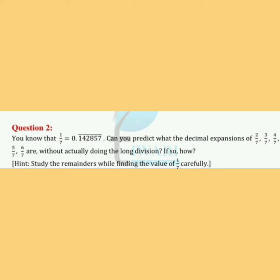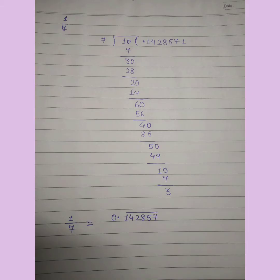सबसे पहले आपको पता होना चाहिए कि 1/7 का जो decimal expansion है — 0.142857 bar — वो कैसे आया। अगर question में answer नहीं दिया होता, तो सबसे पहले हमें 1/7 को divide करना पड़ता, जैसे हमने question number first में किया था। हम तब तक divide करते हैं जब तक remainder 0 न आ जाए या वही term वापस repeat होने लगे।